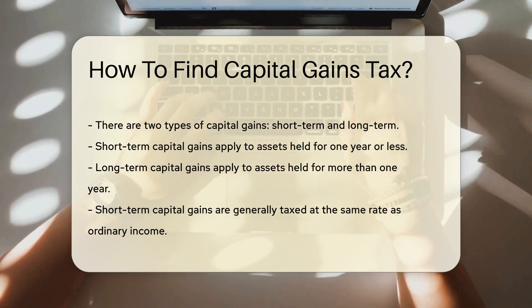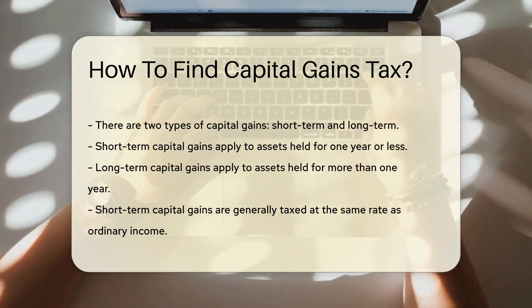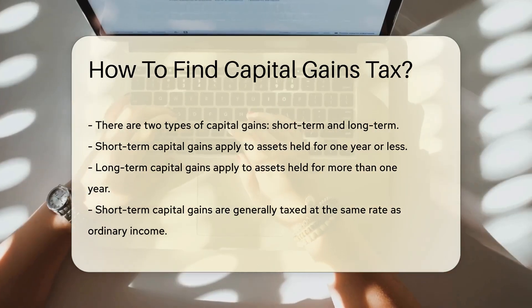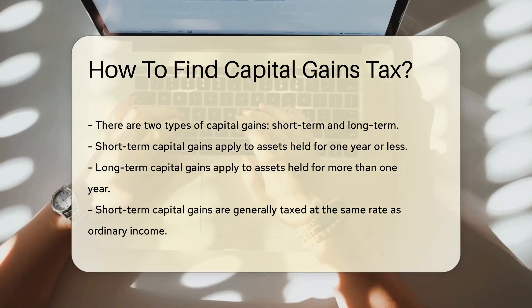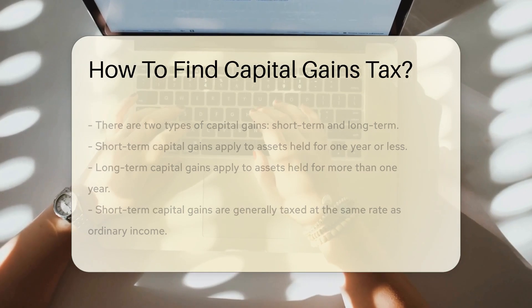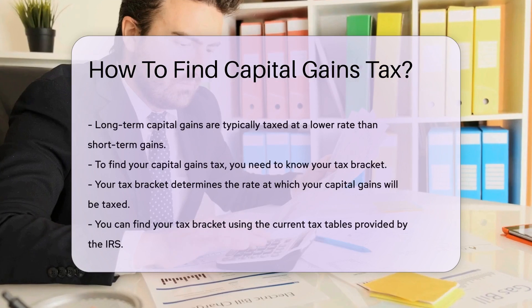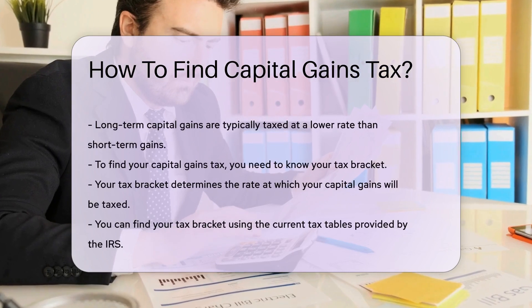The tax rates for short-term and long-term capital gains are different. Short-term capital gains are usually taxed at the same rate as ordinary income. Long-term capital gains are typically taxed at a lower rate.